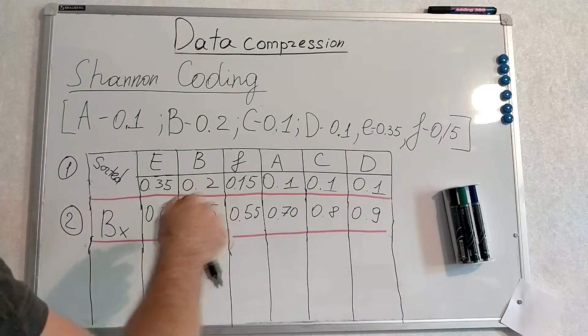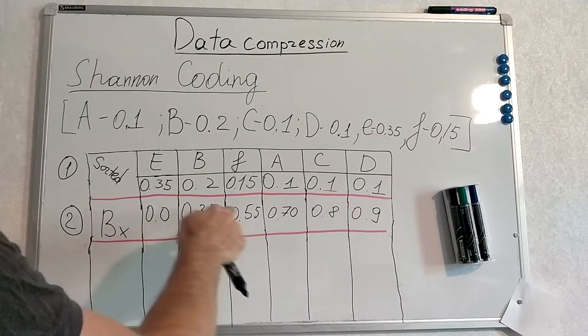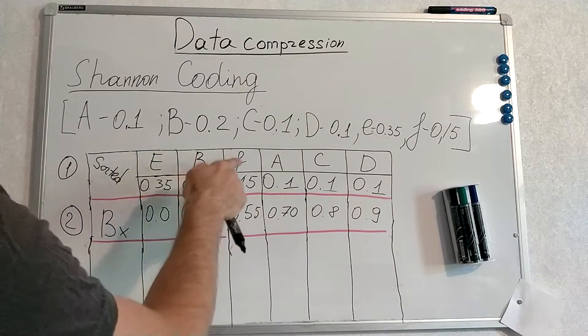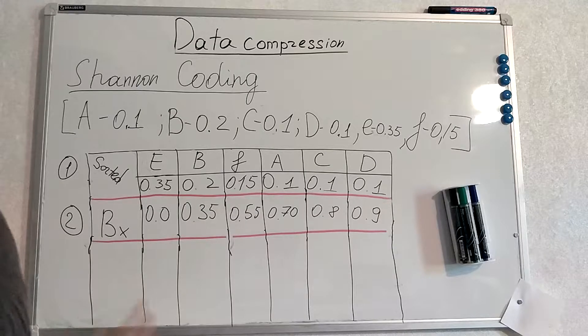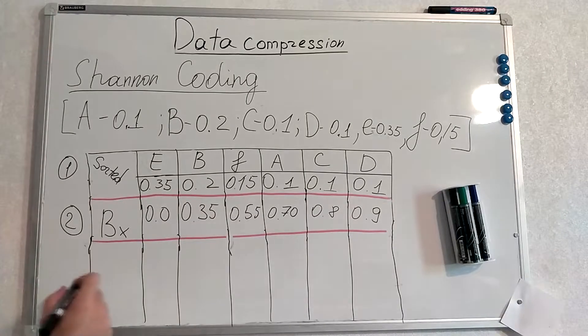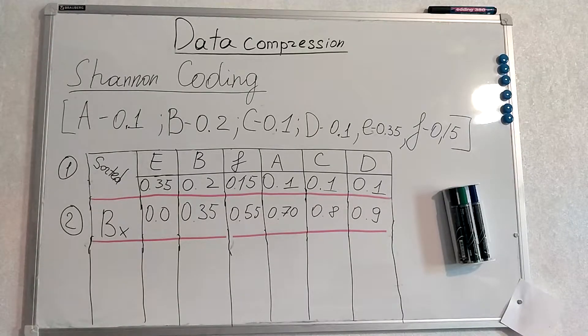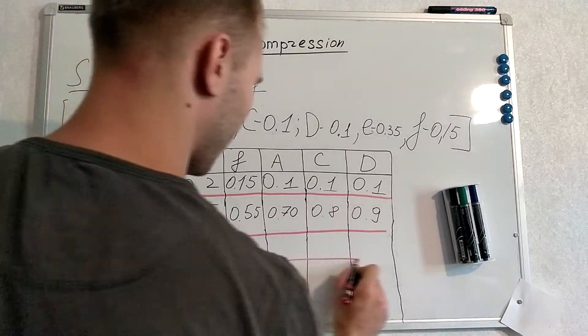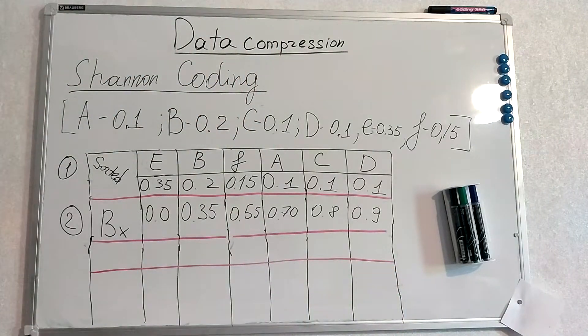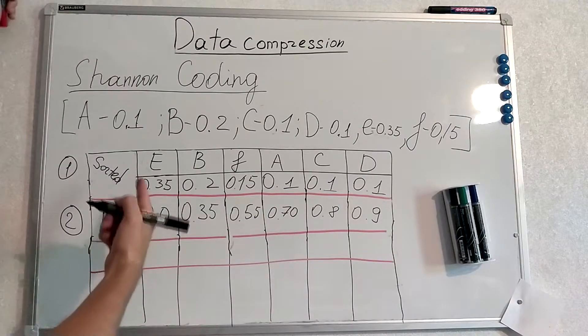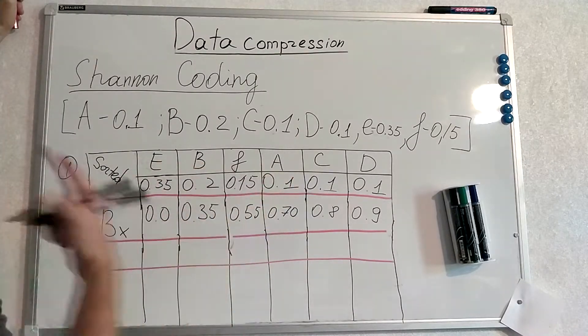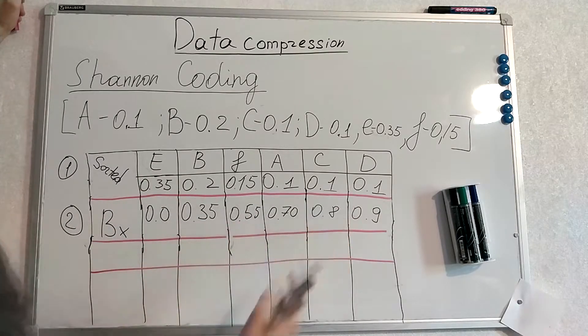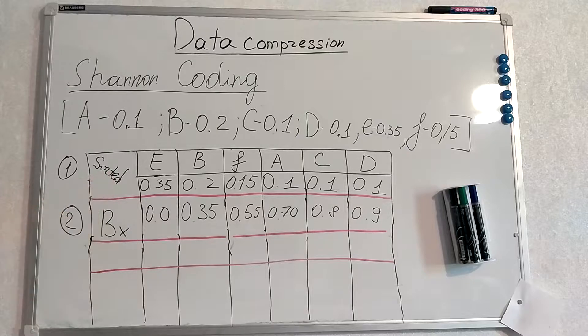Once again, Bx for some symbol is the sum of all probabilities of the symbols we have seen before this particular symbol in this sequence. I think a very good idea is to form our coding scheme as a table. Next step will be to make binary codes for our symbols according to these probabilities, according to the probabilities of Bx.